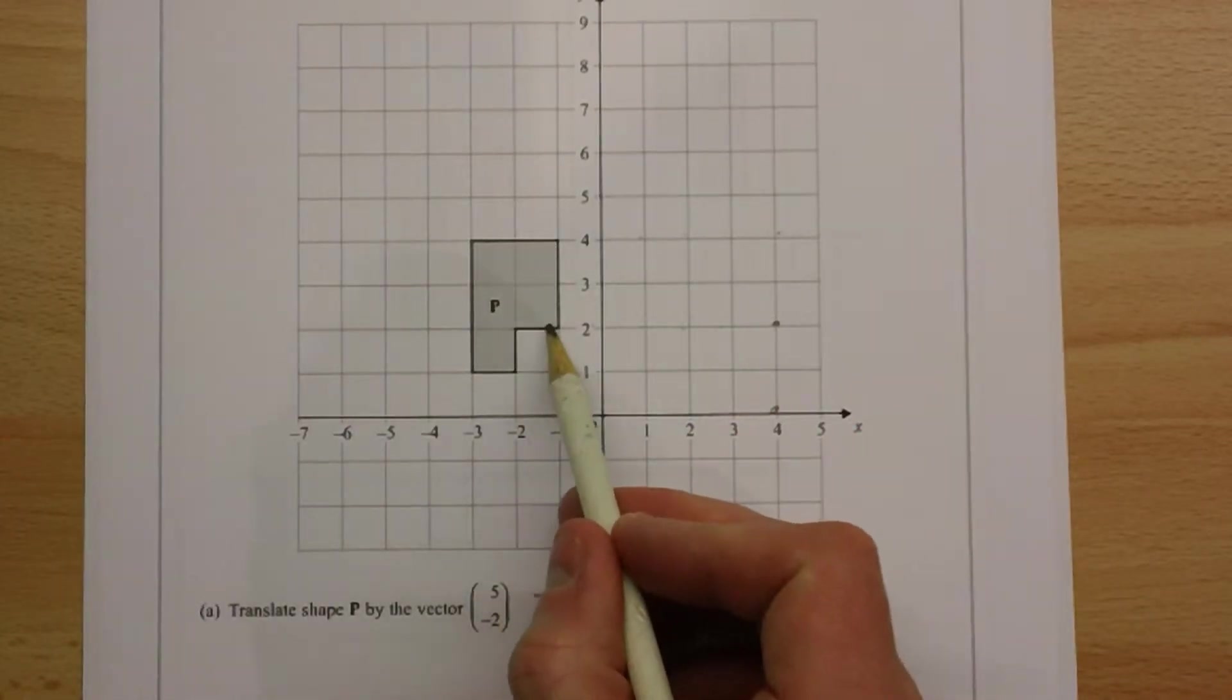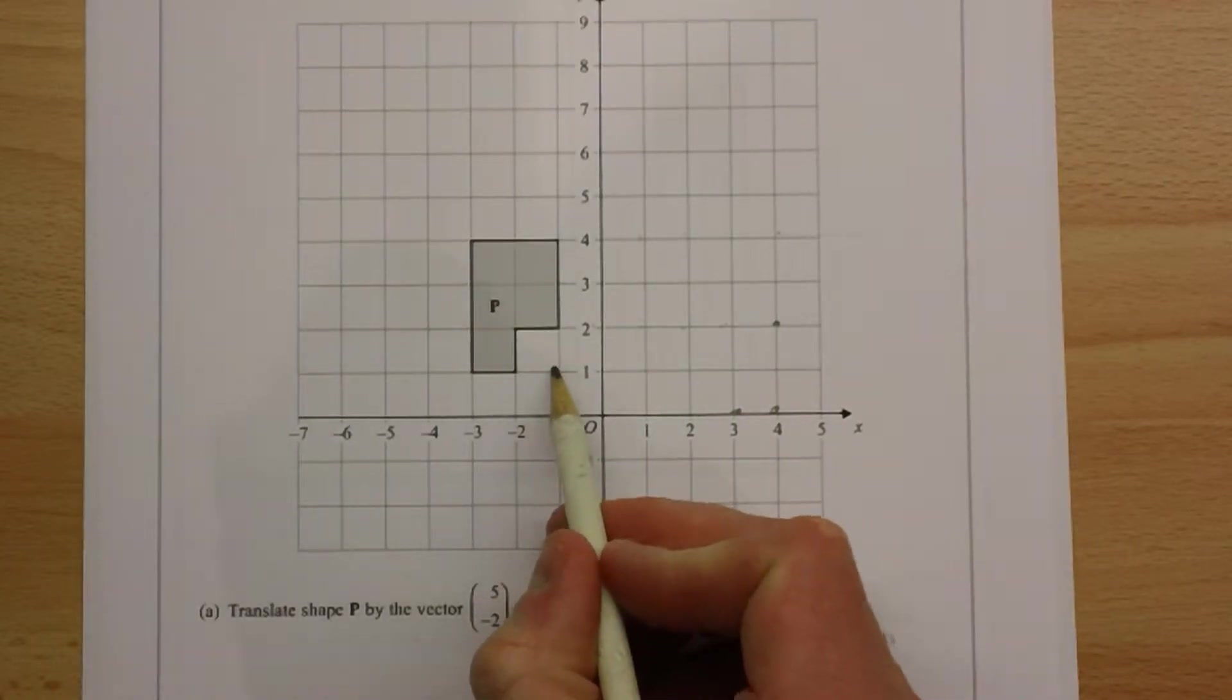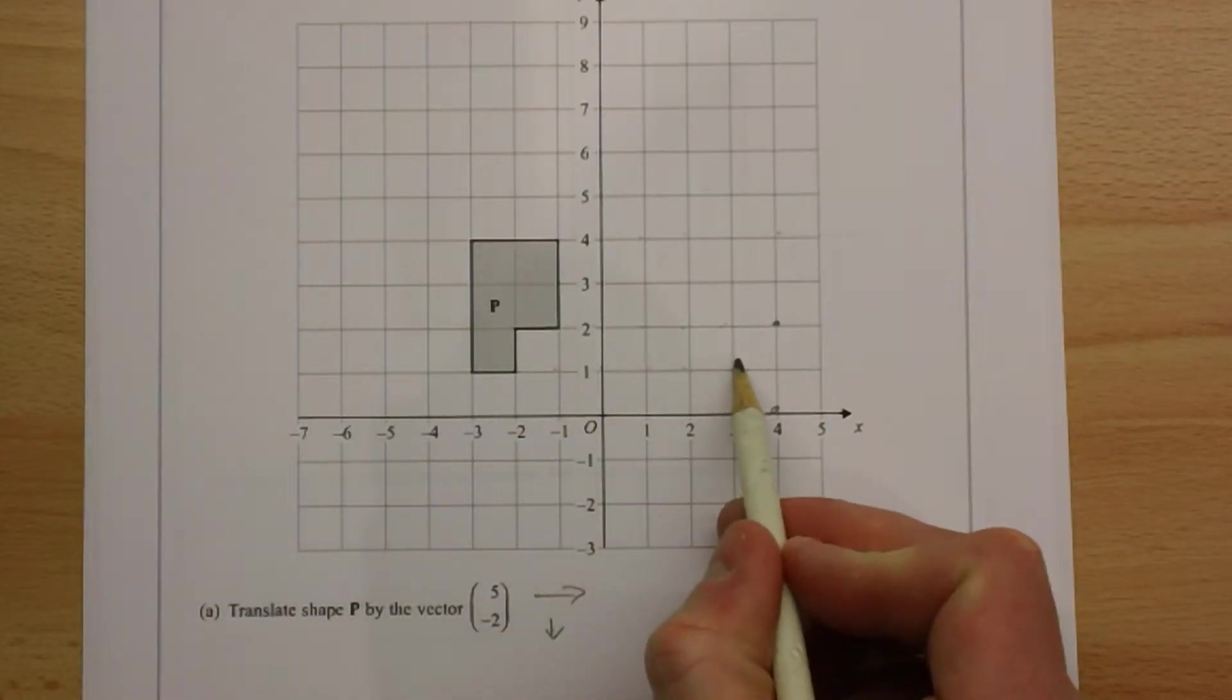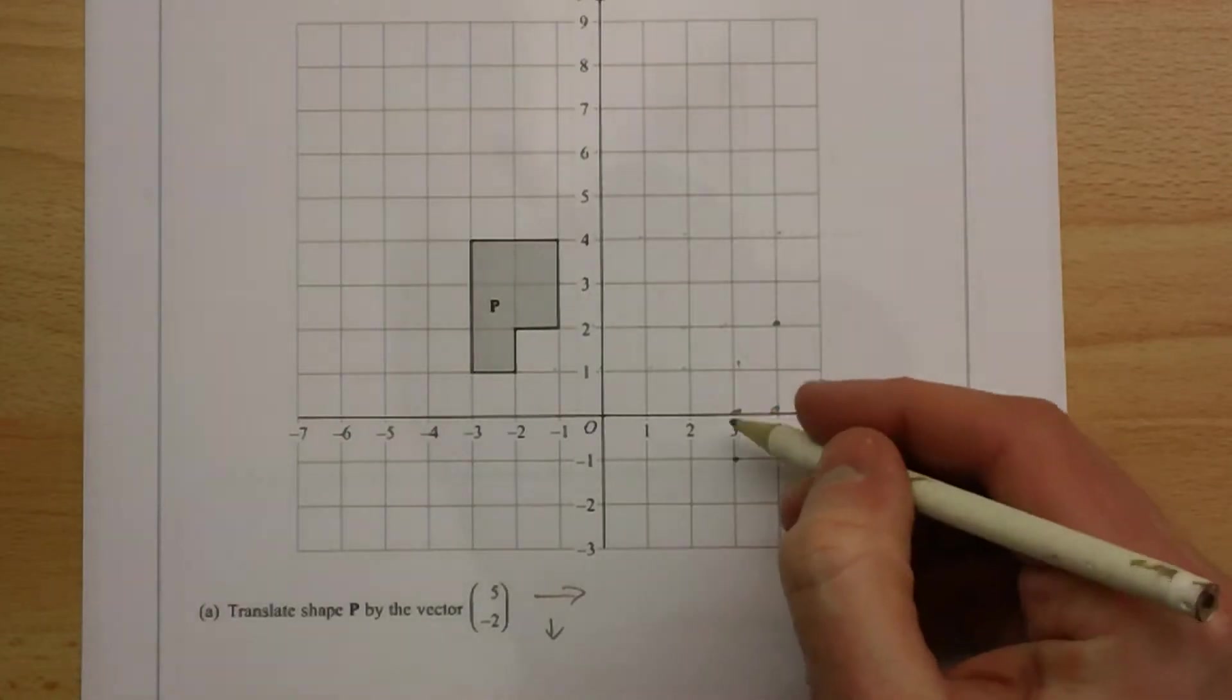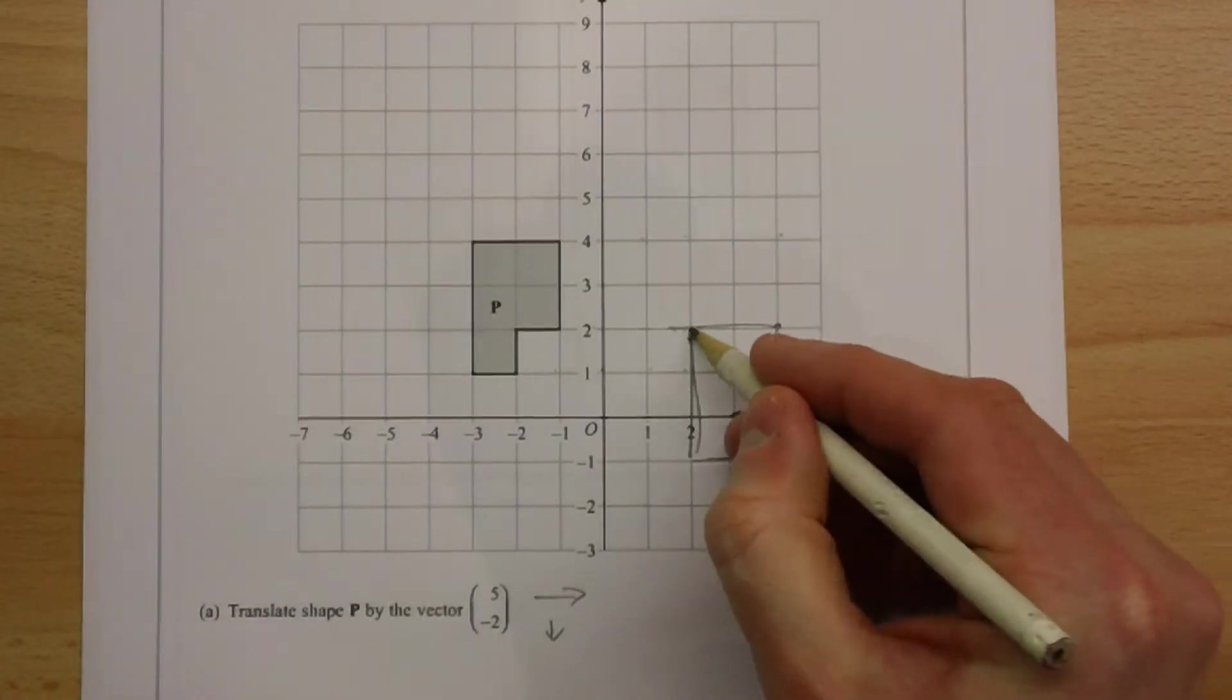This point here, one, two, three, four, five, and two down. At this point, one, two, three, four, five, and two down. And keep on doing that until you can build up a picture of exactly where the shape could go.